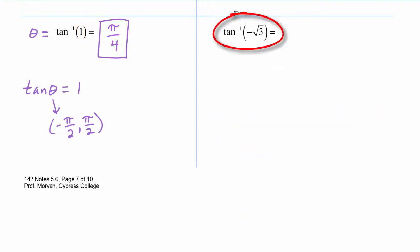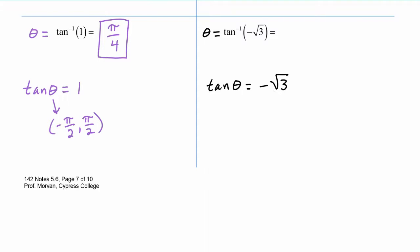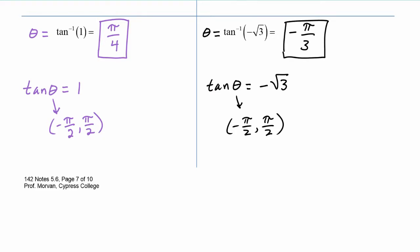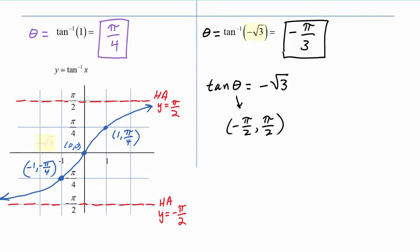For the tangent inverse of negative root three, we know that's going to output an angle, and we can rewrite that as tangent of theta is equal to negative radical three. Theta has to be between negative pi over two and positive pi over two. The only angle in this interval whose tangent is negative root three is negative pi over three. On the graph of tangent inverse, inputting negative radical three outputs negative pi over three.